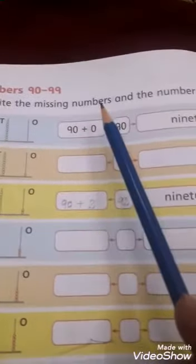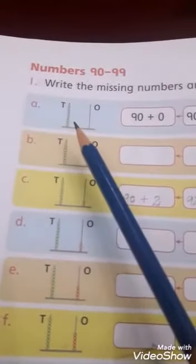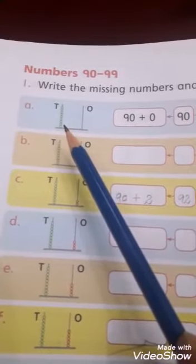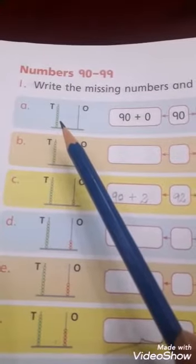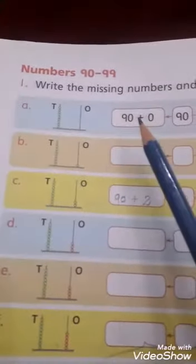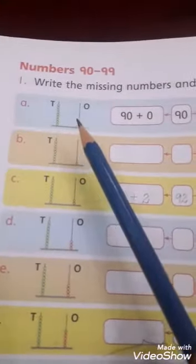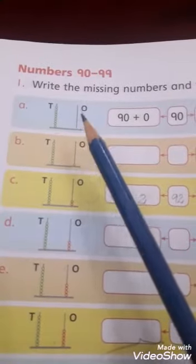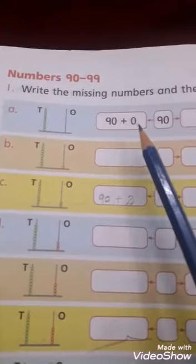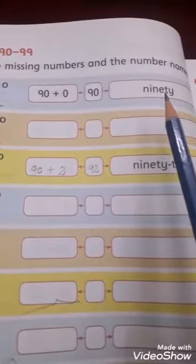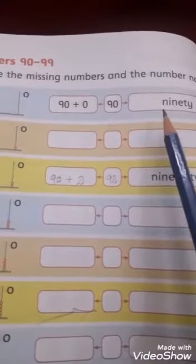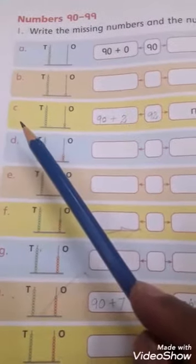Now we will read the question: write the missing numbers and the number names. Part A: there are nine beads in tens rod means 90, and zero beads in ones rod means 0. 90 plus 0 equals 90, ninety.